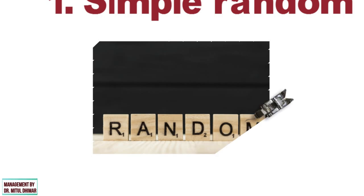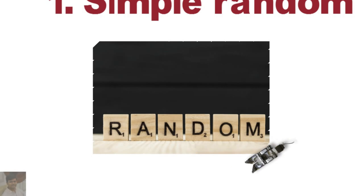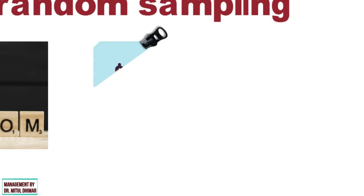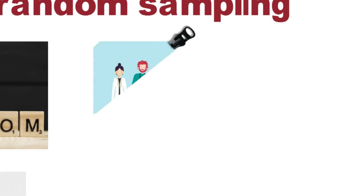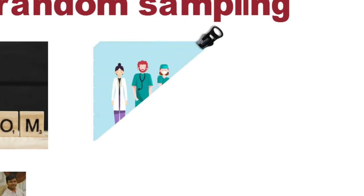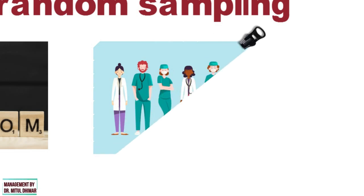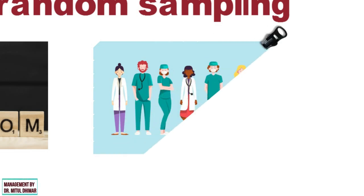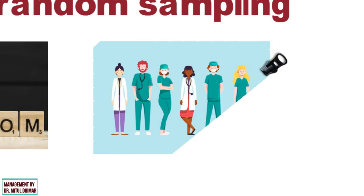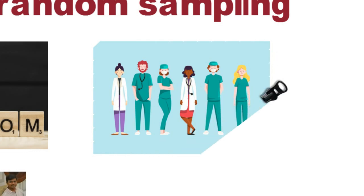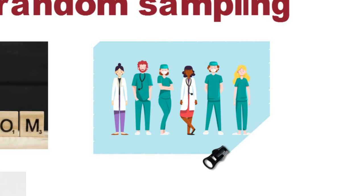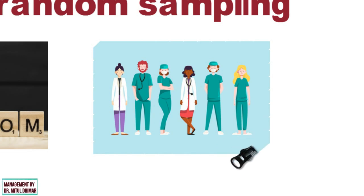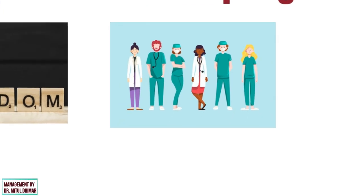If as a researcher you want to save time and money, simple random sampling is one of the best probability sampling methods you can use. For example, a hospital has 1000 employees and they need to allocate the night shift to 100 members. All employee names will be put in a bucket to be selected at random, as each person has the same chance of being selected.